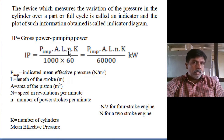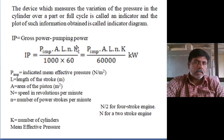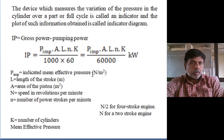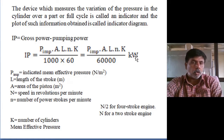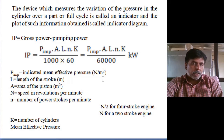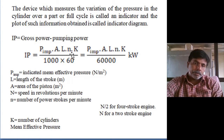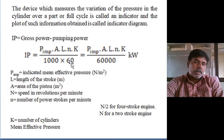That is PLAN. For a multi-cylinder engine, K is the number of cylinders. And we divide by 1000 if indicated mean effective pressure is in Newton per meter square, to convert to kilonewtons. If speed is in RPS, divide by 60 is not required. But speed is generally measured in RPM, so we divide by 60.